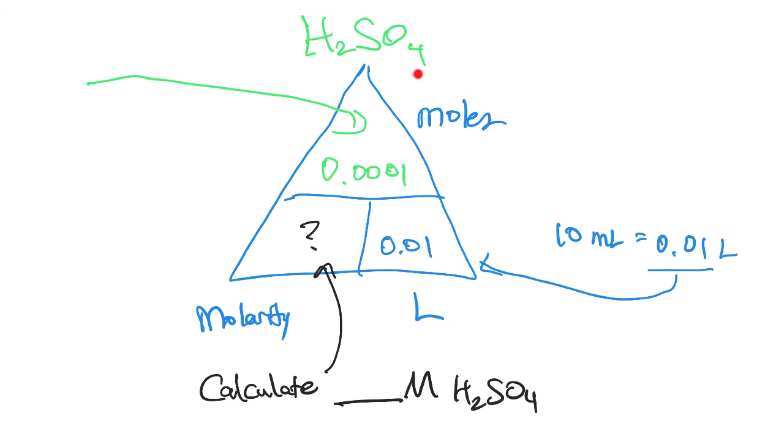That's how many moles of the acid, H2SO4. So we did that on the previous screen. We're dropping that into this magic triangle. Moles goes on the top. Liters, moles per liter is molarity. We're being asked to solve for the molarity of the acid.